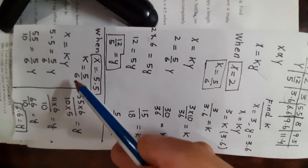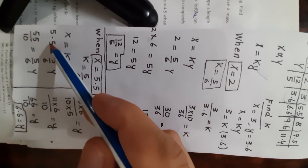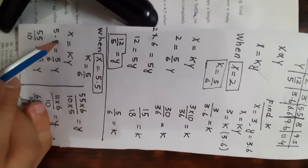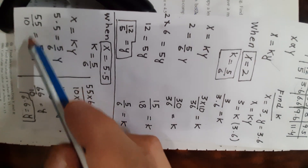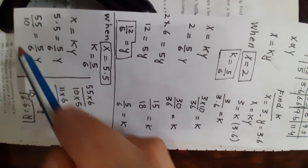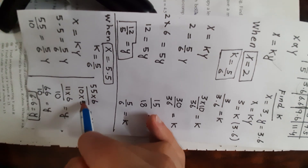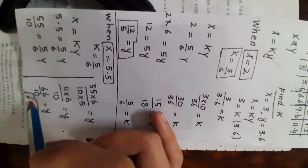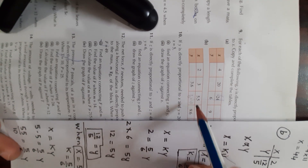When x is 5.5 and k is 5/6, use x equals ky. Write 5.5 as 55/10 to remove the decimal. Cross-multiplying: 6 times 55 over 10 times 5 simplifies — 5 and 55 cancel to give 11 times 6 over 10, which is 66/10 equals 6.6. So y is 6.6 when x is 5.5.